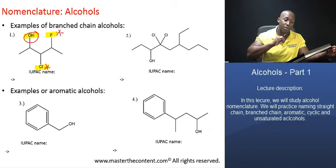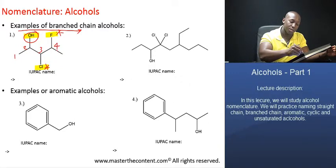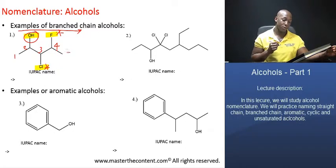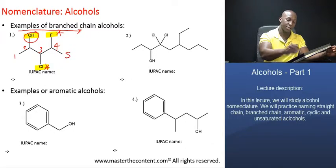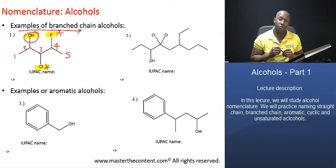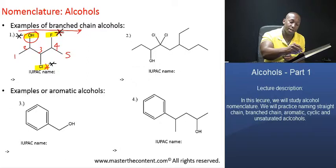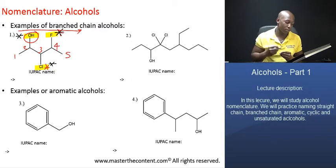You want to number the chain to give the hydroxyl group the lowest possible number. Moving from left to right, that makes carbon number one, two, three, four, and five. The hydroxyl group is attached to carbon number two, the chlorine substituent to carbon number three, and the fluorine substituent to carbon number four.